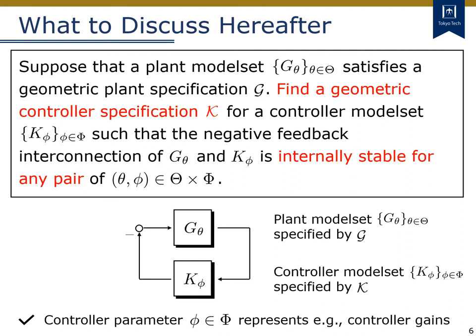In this slide, I explain what we will discuss in the remaining part of this lecture. The main objective is as follows. For a given plant model set, which is specified by the geometric plant specification G, we aim at finding a geometric controller specification K, which gives a specification of the controller model set, where the parameter φ represents some controller gains. Please note that the internal stability of the feedback system must be guaranteed for any pair of possible plants and controllers.